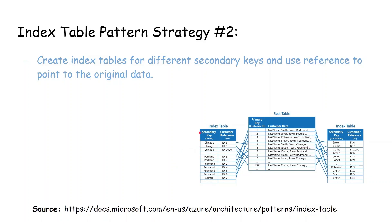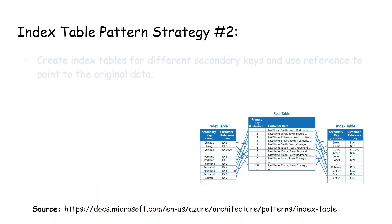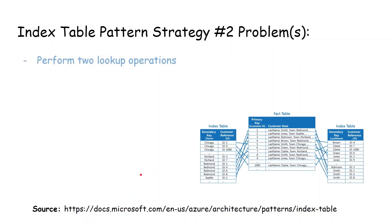The second strategy is to create index tables for different secondary keys. For example, one index table uses town as the secondary key and another uses last name. When querying by town or last name, the index table returns the customer ID, which references the original fact table. We then retrieve the full record in a two-lookup operation — first get the customer ID from the index table, then look up that ID in the fact table.